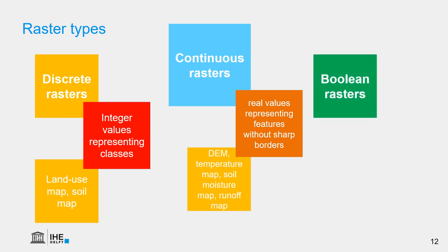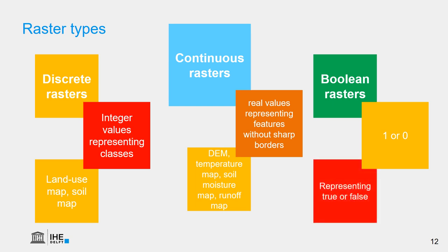A special data type is boolean rasters. Boolean rasters only have a value of 1 or 0, where 1 means true and 0 means false. This is very important if we want to represent, for example, flood maps — the area that is flooded gets a value of 1, and the area that is not flooded gets a value of 0.